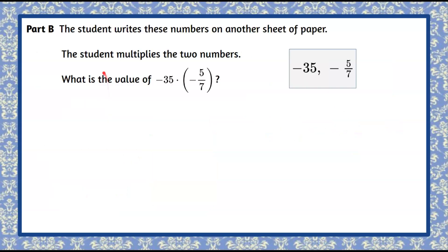Here's part B. The student writes these numbers on another sheet of paper. The student multiplies the two numbers, and you're asked: what is the value of negative 35 multiplied by negative five-sevenths? Please pause now, multiply, and then come back to check your work.